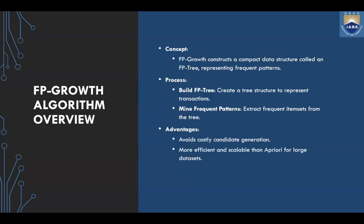The next algorithm is the FP Growth algorithm. It constructs a compact data structure called an FP tree, which stands for frequent pattern tree, to represent frequent patterns. The process involves building an FP tree and then mining frequent patterns from it — creating a tree data structure to represent the transactions and extracting frequent item sets from that tree. A key advantage is that it avoids costly candidate generation as seen in the Apriori algorithm.